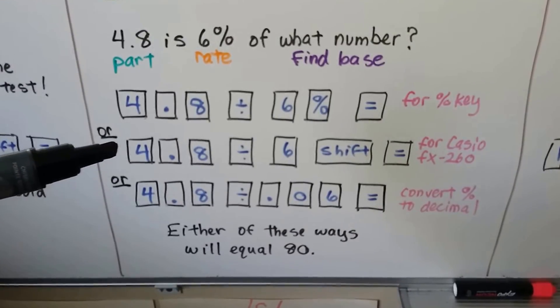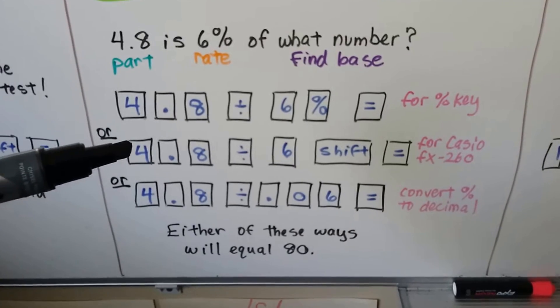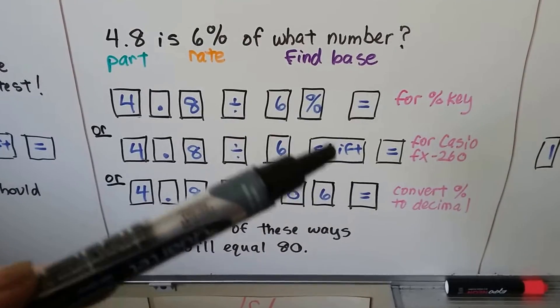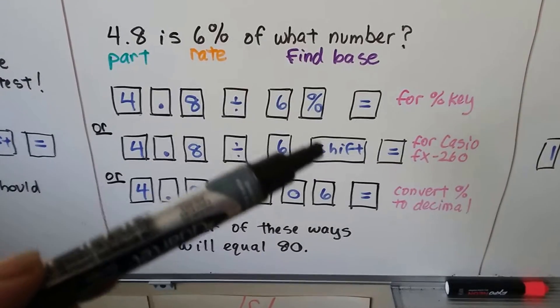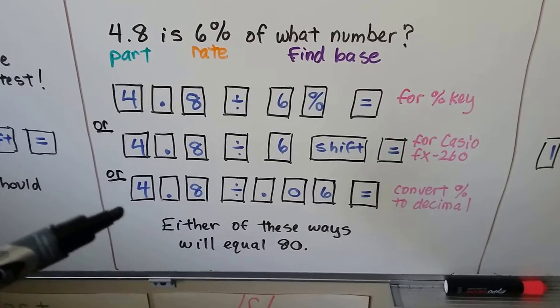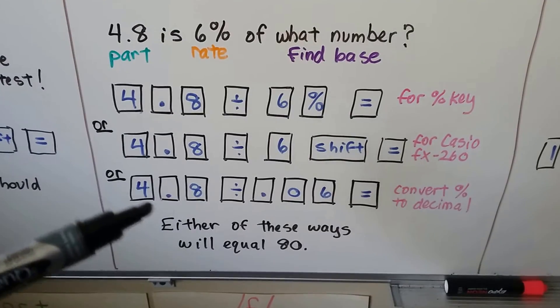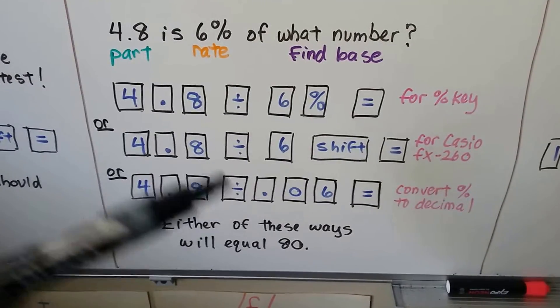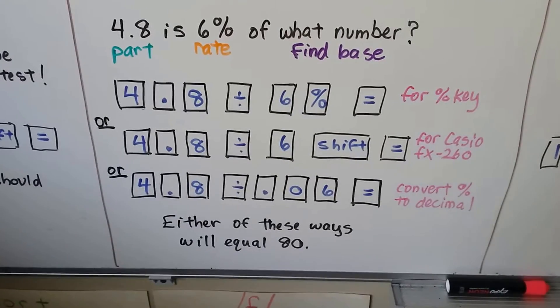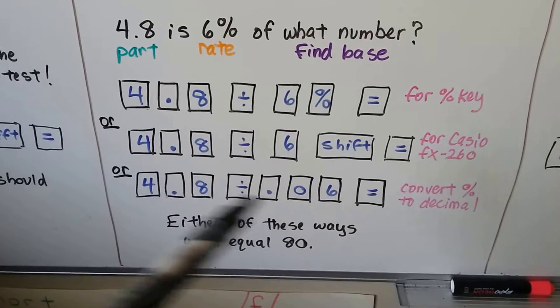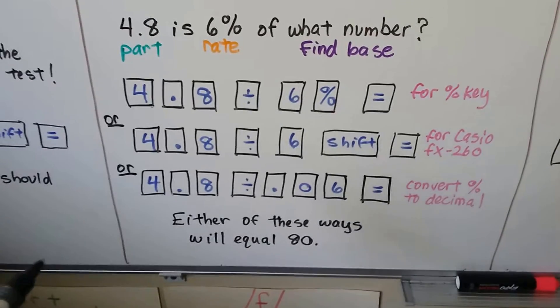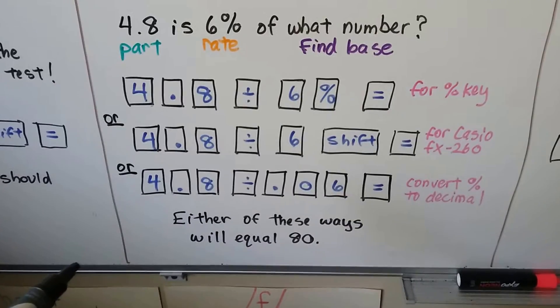This is for the Casio FX260 that they might lend you. You put in 4, then the decimal point, then the 8, then the division sign, then a 6, and then shift equals. Because remember the shift equals is the same thing as the percent. Or you could stick to your old regular way of doing 4, decimal point, 8, then the division sign, and this is converted to a decimal as .06 and hit equals. I actually like this third way of us converting it to a decimal because that way we don't have to worry about what brand of calculator we've got.